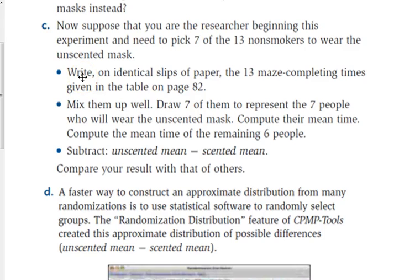What this process does is it's saying assume the treatment does not make a difference. Those 13 times there could have been for somebody wearing a scented mask or somebody not wearing a scented mask. So when you wrote it on slips of paper and mixed it up and randomly pulled seven, you're saying it doesn't matter whether this person wore that mask or not - this is the time they would have gotten anyways. So let's randomly assign these times to a treatment.